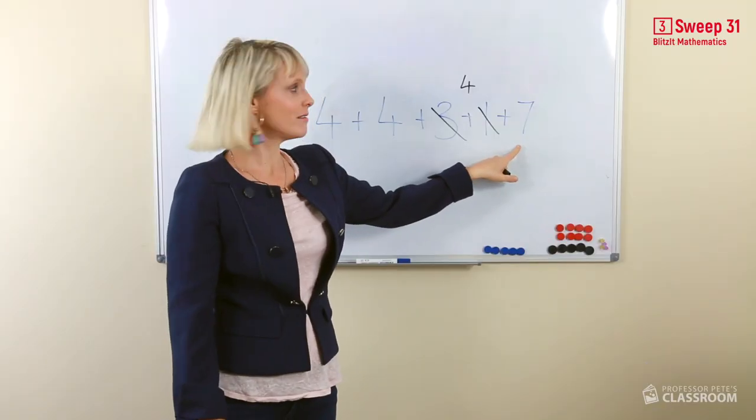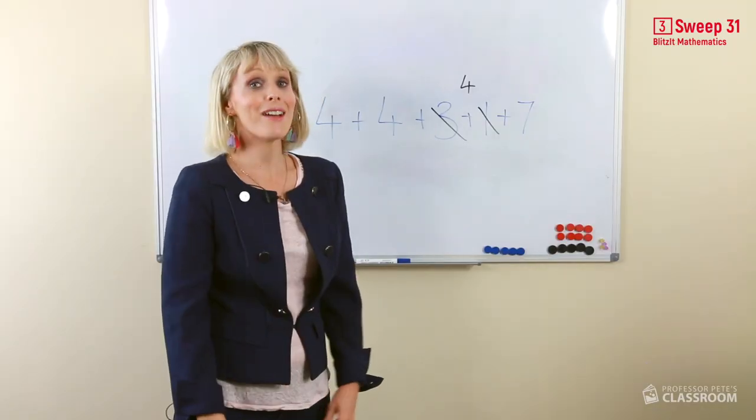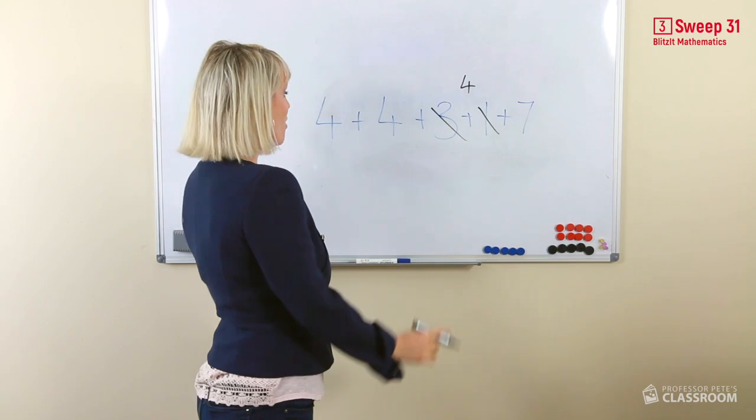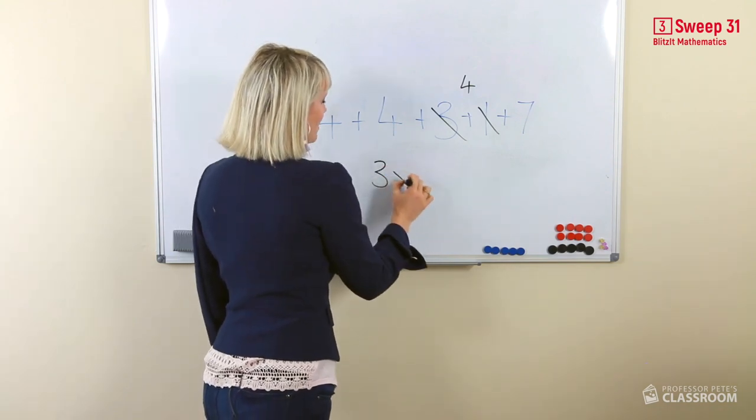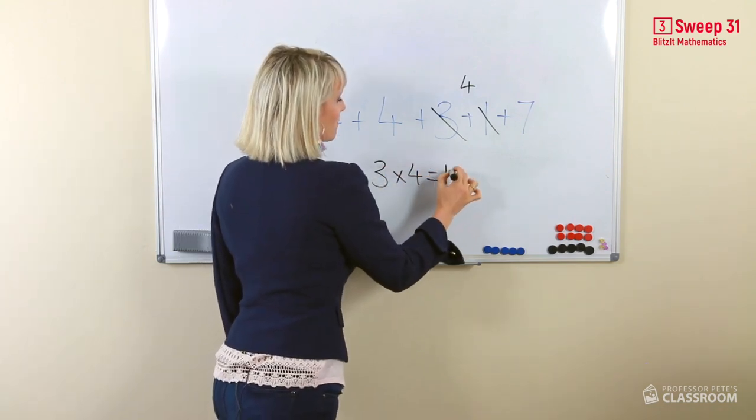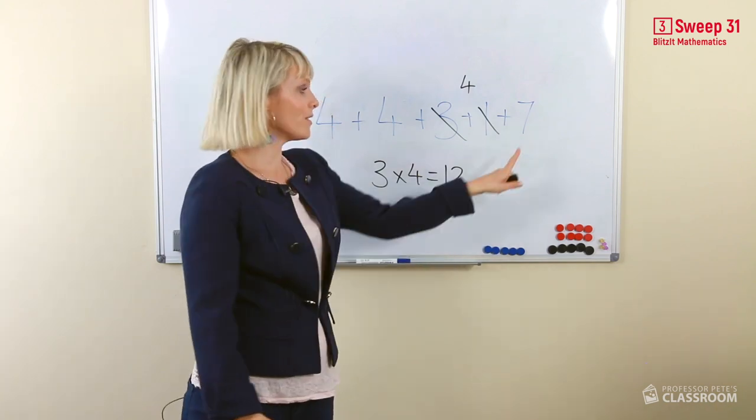But seven, we're going to have to take it back. We know that three fours equals 12. So, 12 and seven.